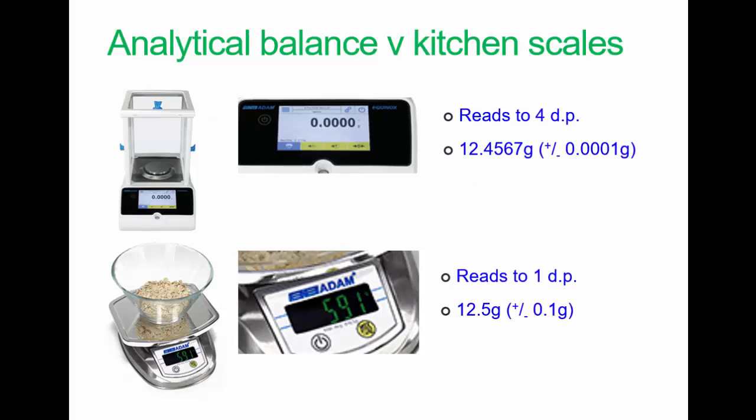Analytical balances versus kitchen scales. The analytical balances you'll find both in the food lab and the chemistry labs read to four decimal places, whereas the scales we use to weigh out food in the food lab only read to one decimal place. So if we try to weigh out 12 grams on the analytical balance, we can weigh that to reasonable confidence to four decimal places, whereas on the scales in the food lab, we can only really weigh to one decimal place. That's something to bear in mind.